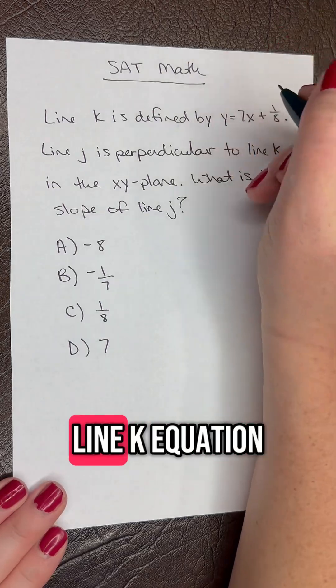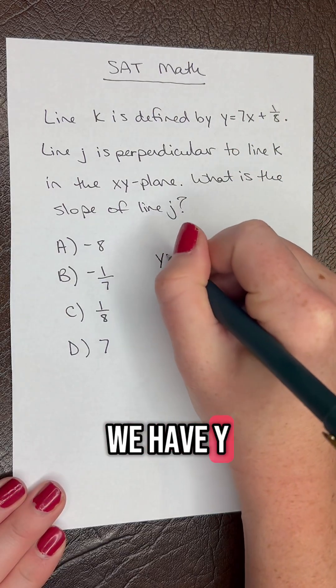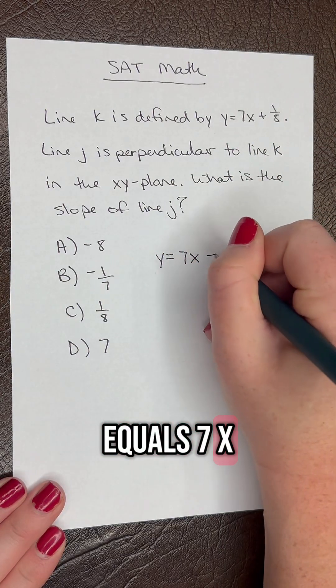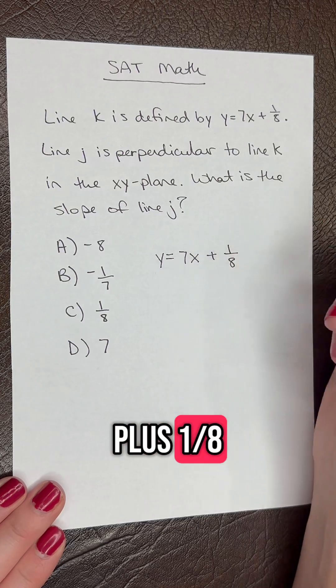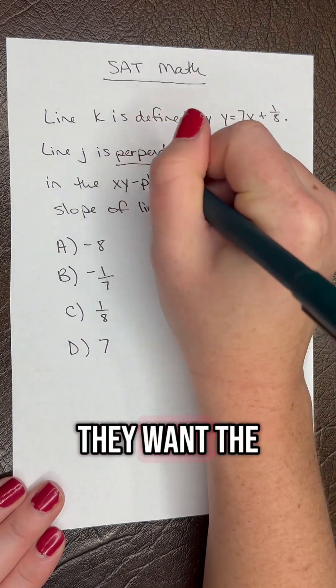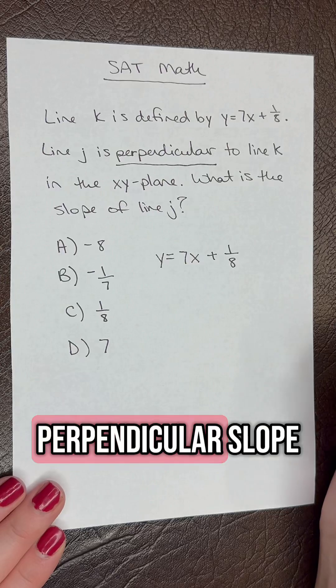So let's start with our line k equation. We have y equals 7x plus 1/8. They want the perpendicular slope.